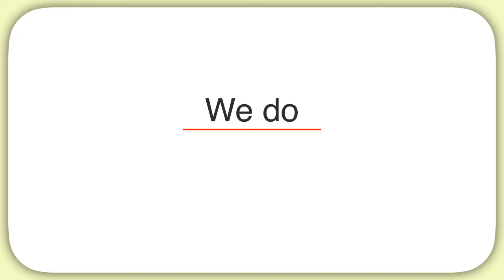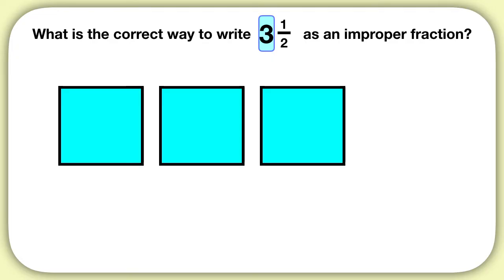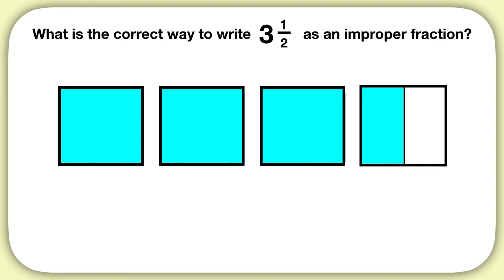Now let's practice one of these together. What is the correct way to write 3 and 1 half as an improper fraction? First we're going to draw out this mixed number. We start by drawing 3 wholes as 3 squares, and then we draw 1 half more as 1 half of a square. Now as an improper fraction, we can't have whole numbers. I'm working with halves, so I'll split each square into halves.